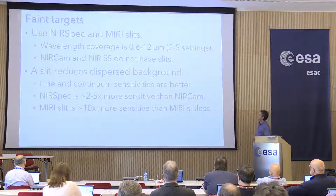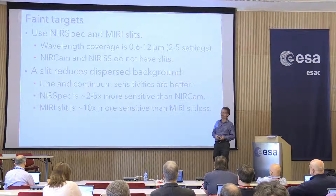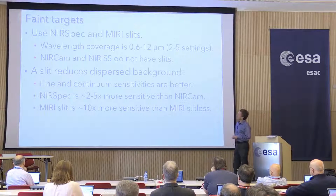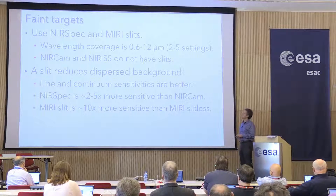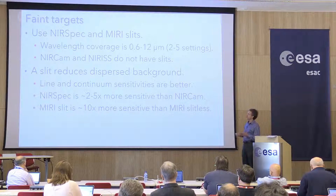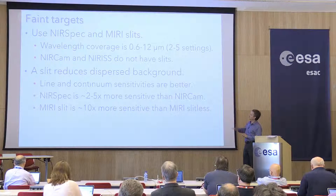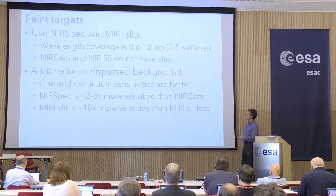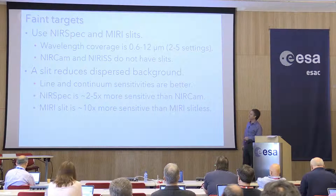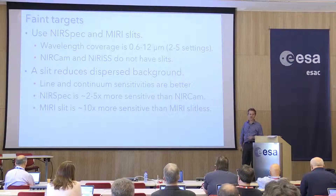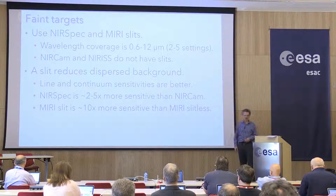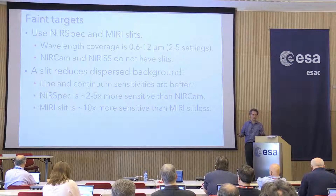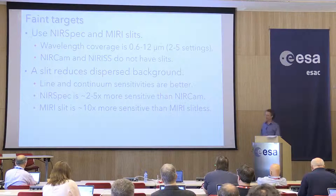For faint targets — so not exoplanets in general — I would say you should use the NIRSpec and MIRI slits. If it's a faint source, you want to avoid dispersed background light; your sensitivity is just higher with a slit. NIRSpec is two to five times more sensitive than NIRCam for these single object spectra, and MIRI is ten times more sensitive with its slit than without, because of the background. That one I'm willing to say: that's the right thing to do.